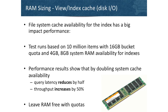With the 2.0 addition of indexes and views, providing extra RAM to cache disk access really helps query performance. Testing shows that by increasing the amount of RAM left available, you can significantly reduce latency and increase throughput on view queries.